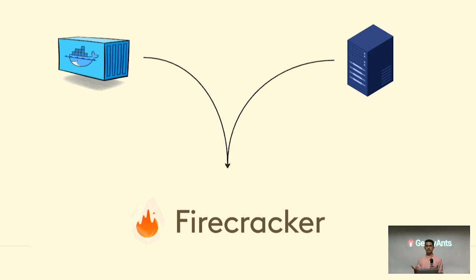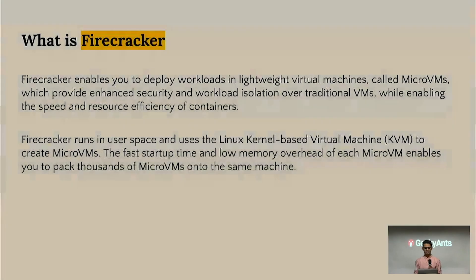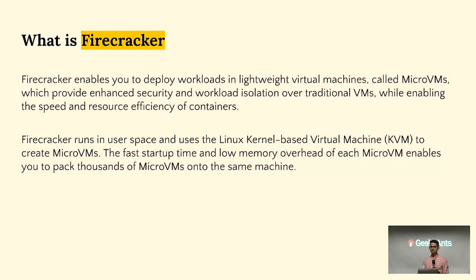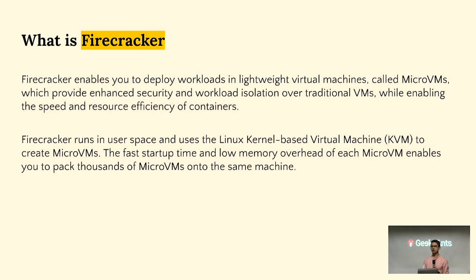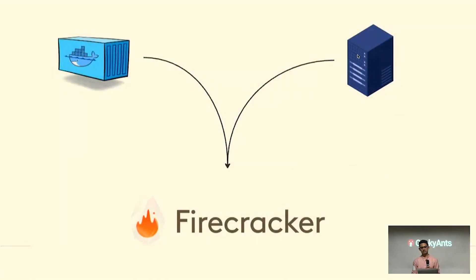Then came Firecracker. AWS introduced Firecracker back in 2018, and it's the underlying concept that AWS Lambda uses. AWS claims they handle trillions of requests for hundreds of users every month just with this concept. Firecracker enables you to deploy workloads in lightweight virtual machines called micro VMs, which provide enhanced security and workload isolation over traditional VMs while enabling the speed and resource efficiency of containers — the best of both worlds.